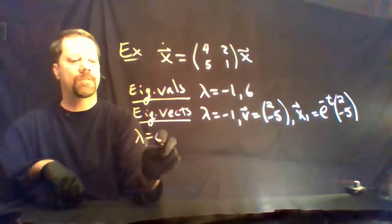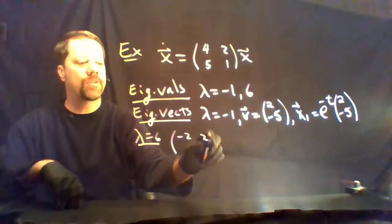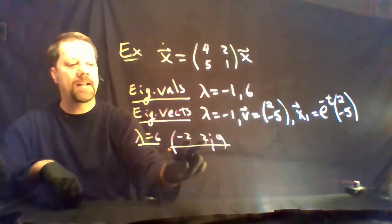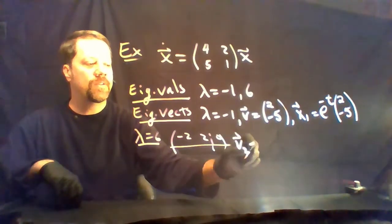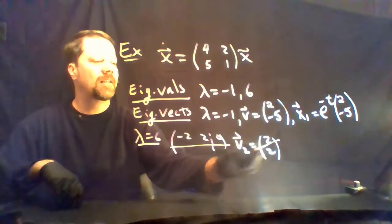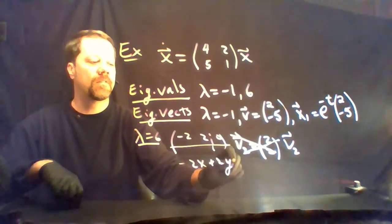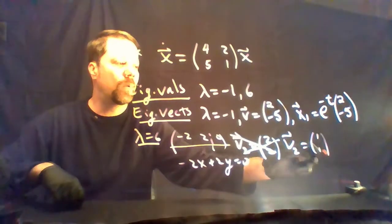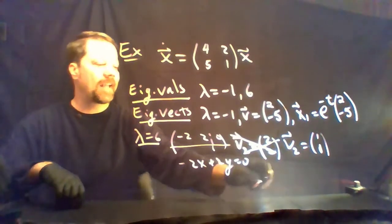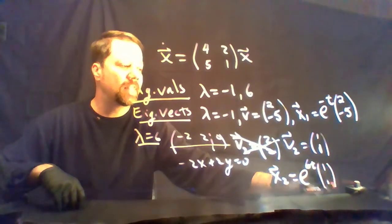We now need to deal with the lambda equals 6 case. Subtracting 6 from the diagonal elements gives us (-2, 2) in the first row; we don't need to write the second row. We could choose v2 equals (2, 2), but even better, solving the same equation, we can choose (1, 1). That gives us a second solution x2 equals e to the 6t times (1, 1).